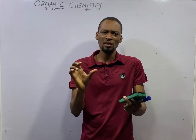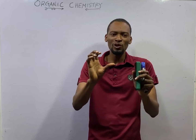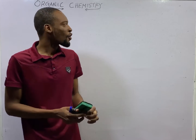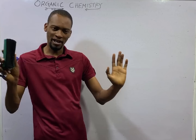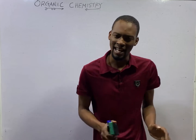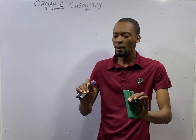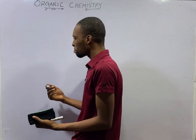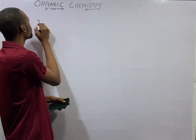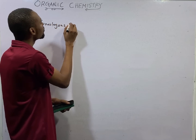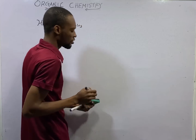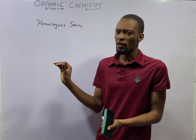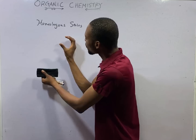In this episode, we shall be taking a look at the characteristics of homologous series. In the previous episode, we agreed that organic compounds are not orphans — they are not left to suffer and die. They belong to families; they are not homeless. And the family of organic compounds is referred to as homologous series, which makes homologous series a family of organic compounds that follow a regular structural pattern.